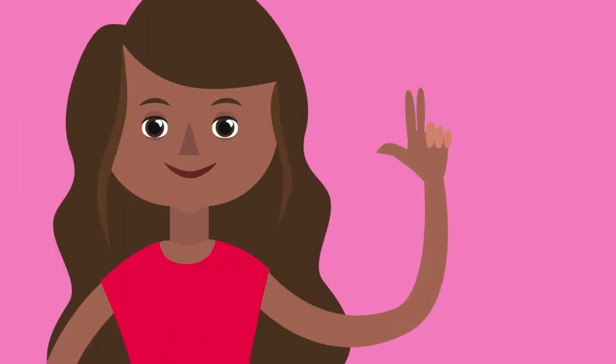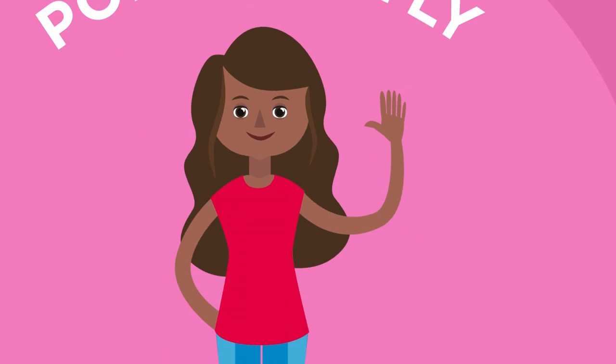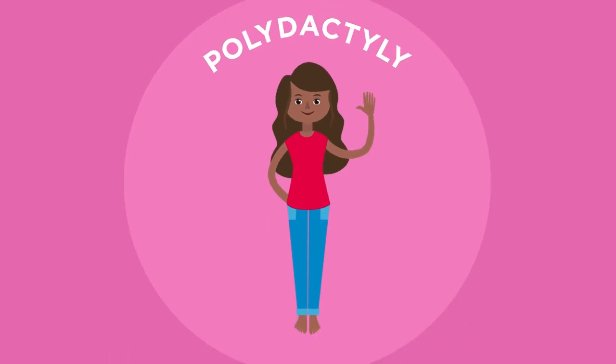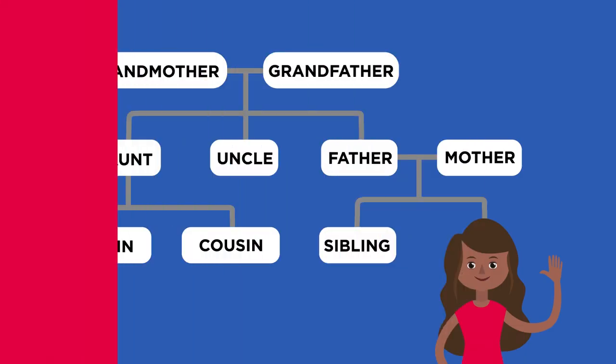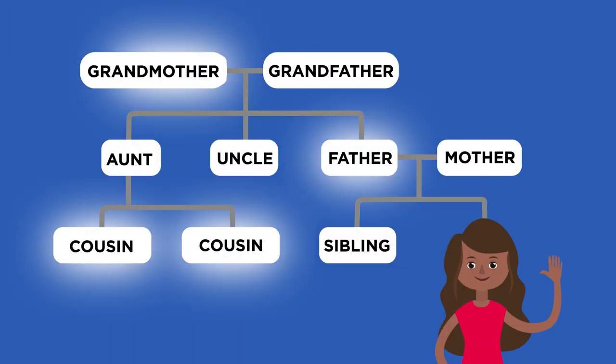This girl has six fingers on her left hand. She has a condition called polydactyly which causes extra fingers or toes. Her father and grandmother as well as some of her cousins also have the condition. This should give you a clue about how she came to have it. Any ideas?